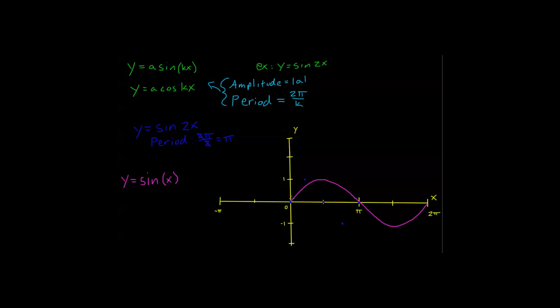So, this new graph, sine of 2x, is going to look like this, right? It looks just like sine, but I've kind of compressed it over to the left. I've shrunk the period down to pi, and that's what y equals sine of 2x looks like.